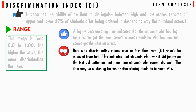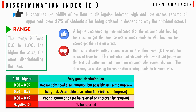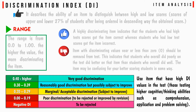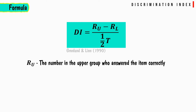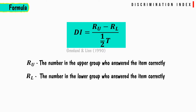An item that confuses better-scoring students should be reviewed using the discrimination index table. Use items with high discriminating index values — those testing higher cognitive thinking abilities such as comprehension, application, and problem solving. The formula for discrimination index is: DI = (RU − RL) / (T/2), where RU is the number in the upper group who answered correctly, RL is the number in the lower group who answered correctly, and T is the total number who tried the item.